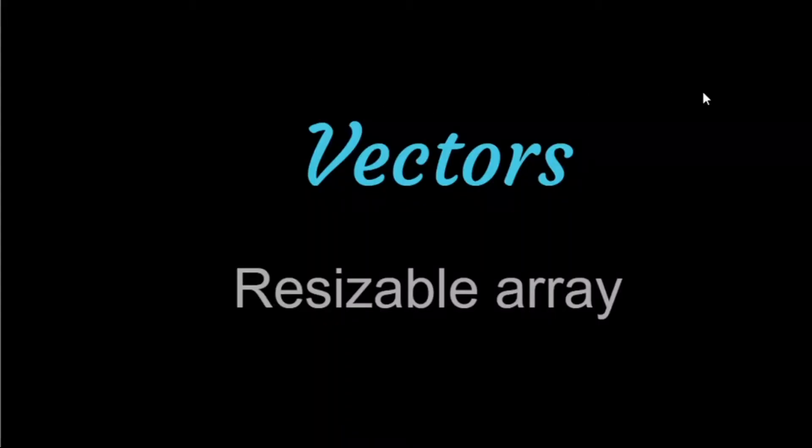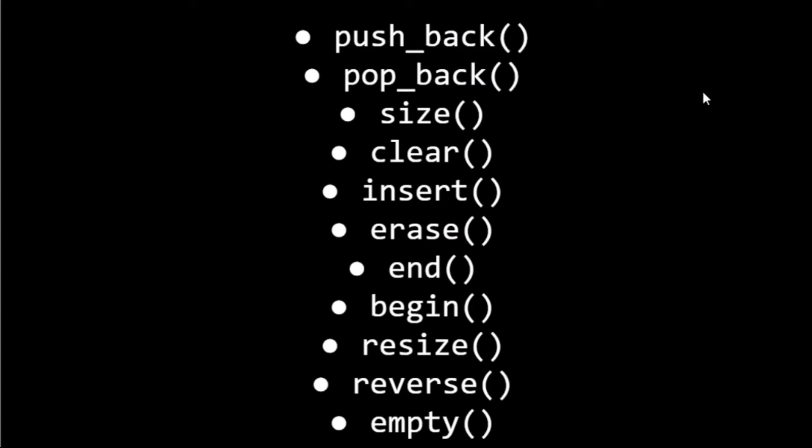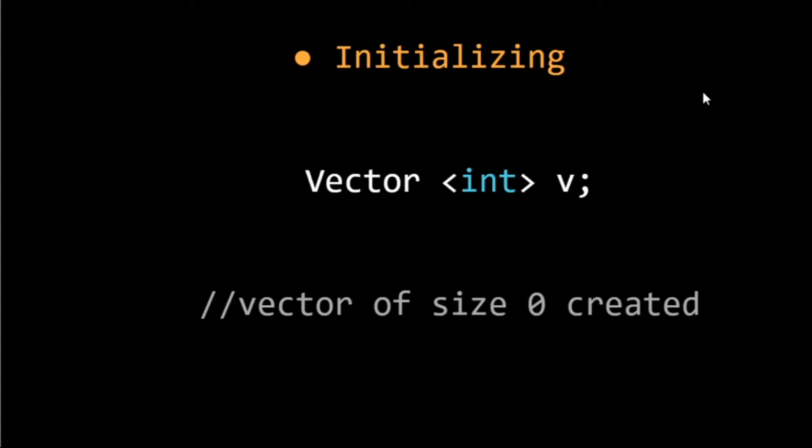Hey everybody, so today we are going to discuss about vector. Vector is the simplest container in STL. It is a simple array having some extended functionalities like it is resizable. For including vector, firstly we have to include the header. In this video we are going to discuss how we can initialize a vector, how we can add, access or remove the elements, and how we can iterate over the vector.